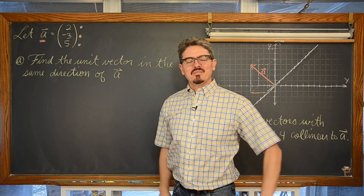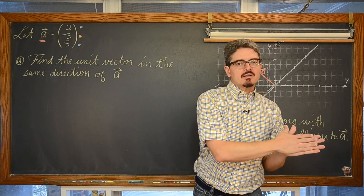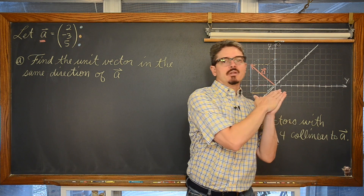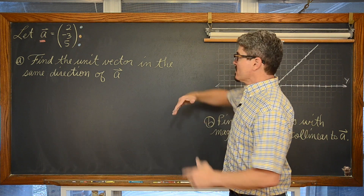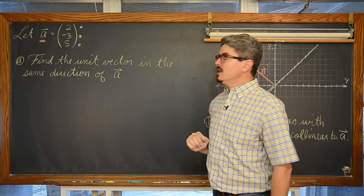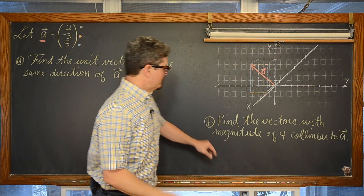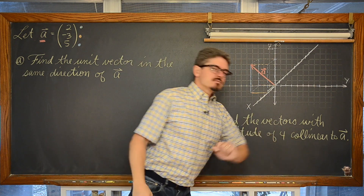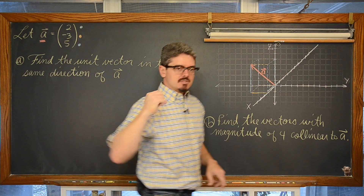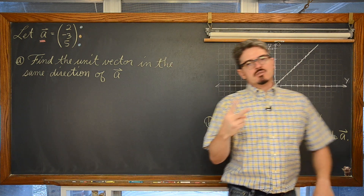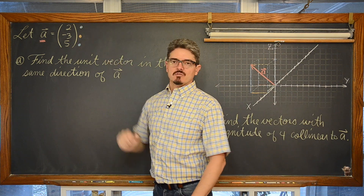BAM! Mr. Tarrou! In this video we are going to extend the concepts we just learned in the last video. We are going to work with finding a unit vector. We are going to be talking about vectors that are collinear and magnitude. But this time instead of two dimensional vectors we are going to be working with a three dimensional vector.